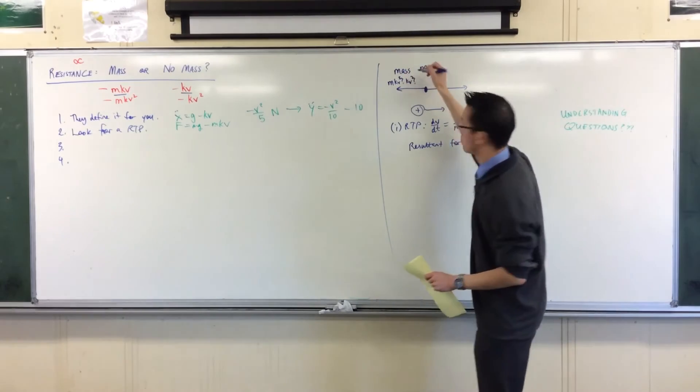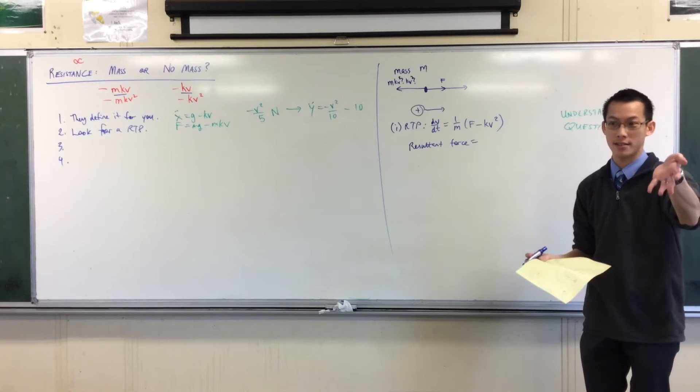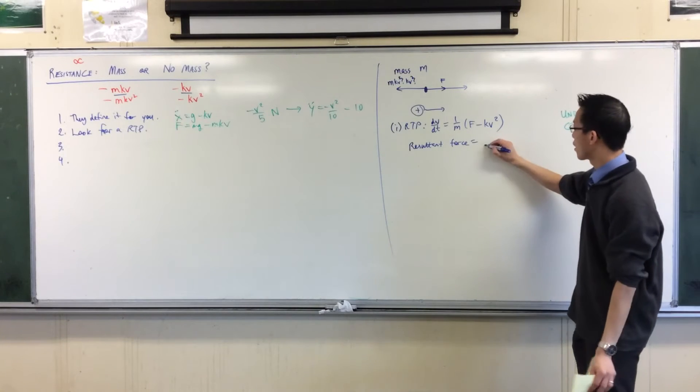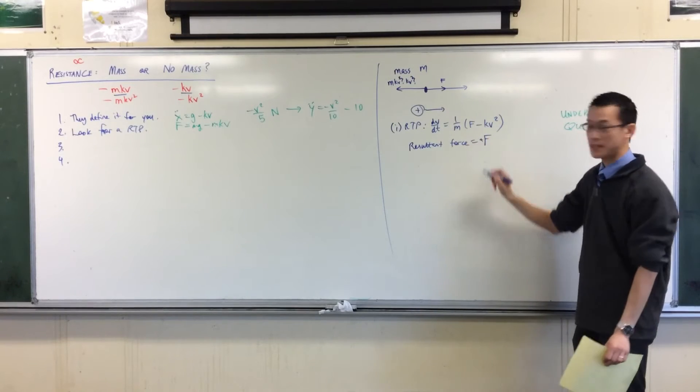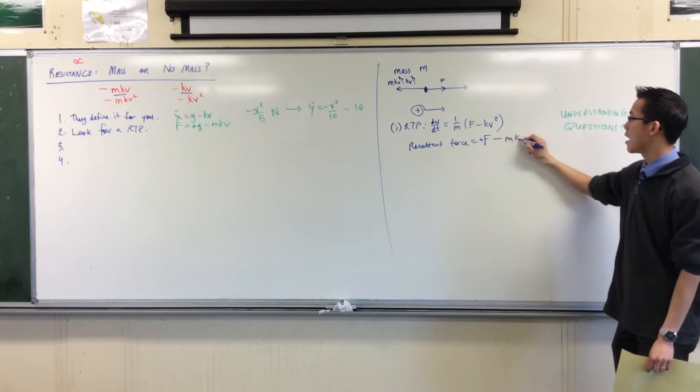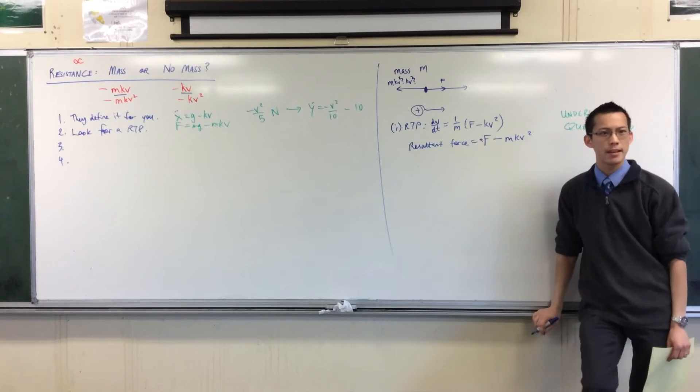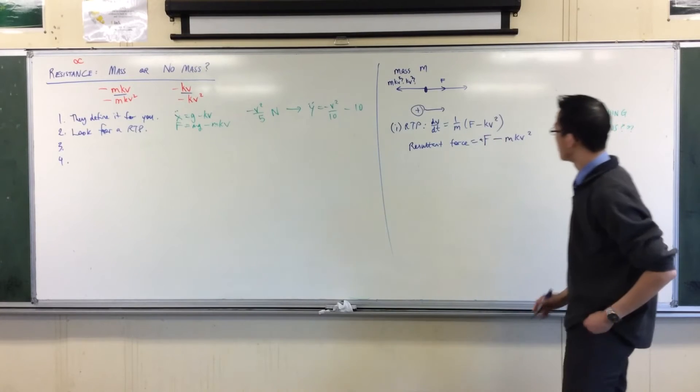So I'm going to add them up. I'm just going to try, for the sake of it, having mass in the picture. So I'm going to go F, that's the positive one, that's the engine, and in the opposite direction I've got mkv squared.